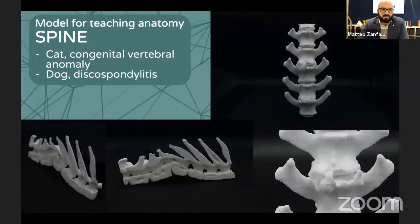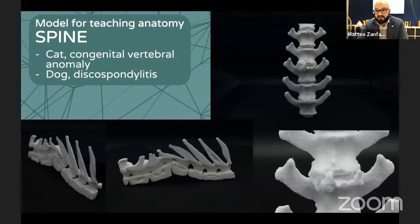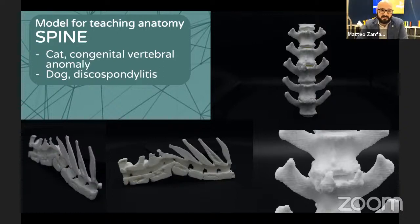I had also some experience in spine teaching anatomy. There are a lot of pathologies that are very difficult to explain to students, to colleagues, and of course to owners. So here is a cat congenital vertebral anomaly, and on the right an example of severe dog discospondylitis.